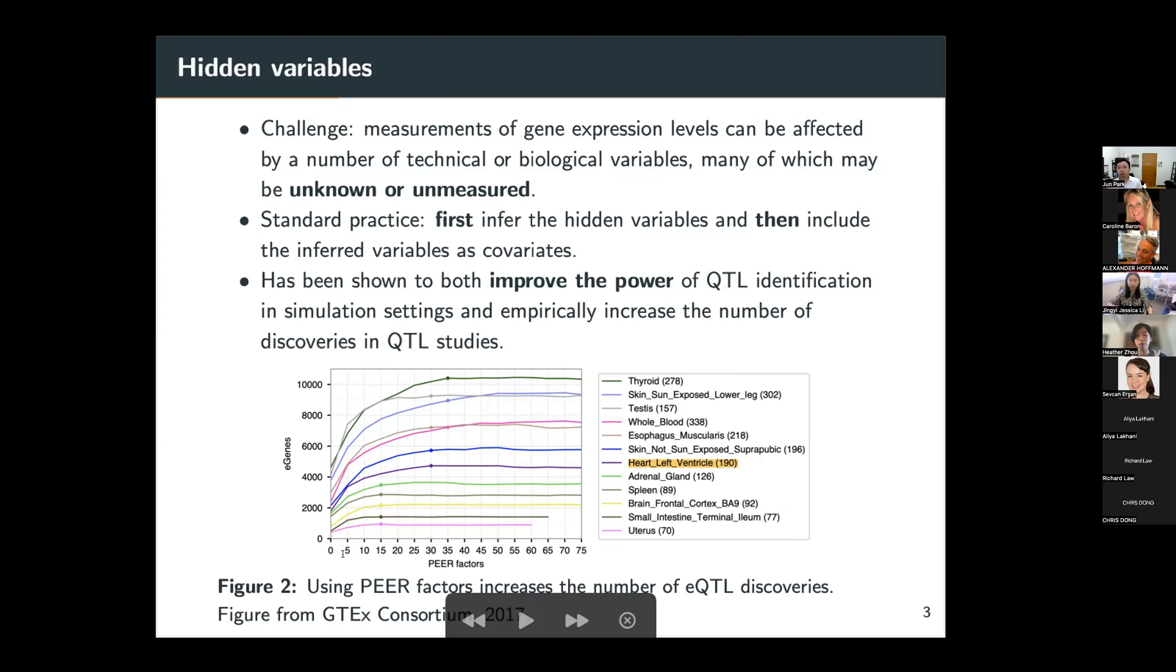as we include up to some number of PEER factors, as opposed to not including any PEER factors. So PEER factors are the most popular kind of inferred variables. In other words, PEER is the most popular hidden variable inference method today.